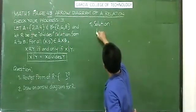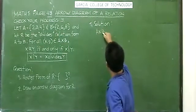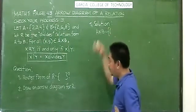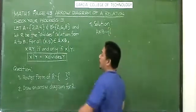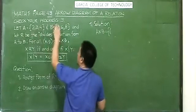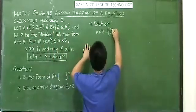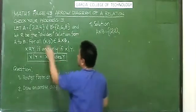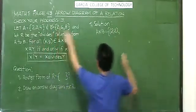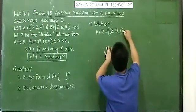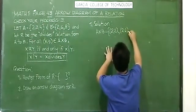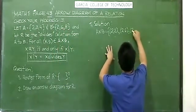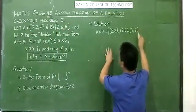So A cross B — what are they? They are all ordered pairs. So: (2,2), then (2,6), then (2,8).